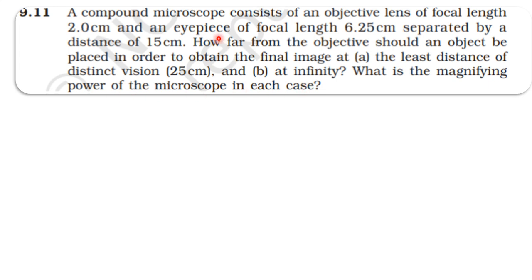That is a compound microscope. In the compound microscope there are two lenses: one is the objective lens and one is the eye lens, that is the eyepiece. The objective lens has a focal length of 2 cm and the eye lens has a focal length of 6.25 cm. The separation between objective and eyepiece is 15 cm.